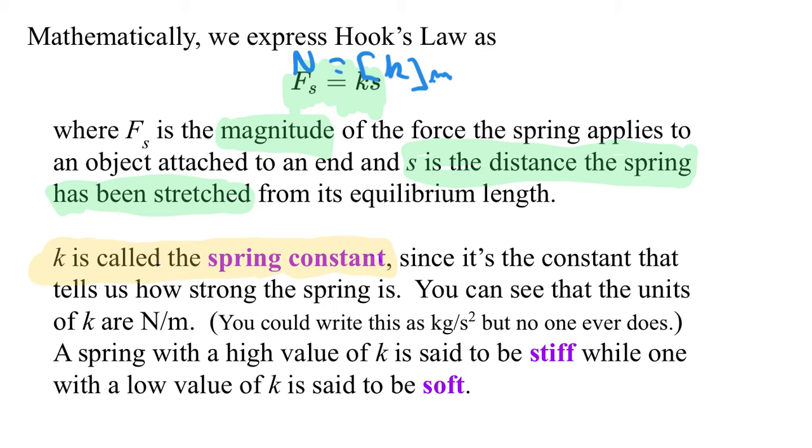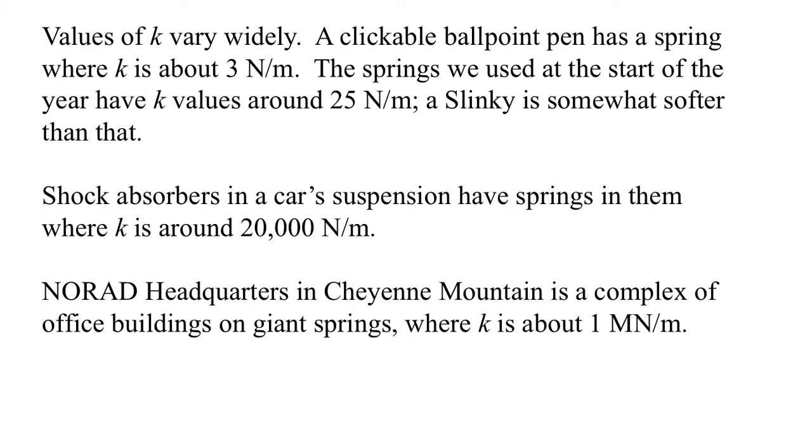A spring that has a high value of K is said to be a stiff spring, while one with a low value of K is said to be a soft spring. Values of K vary widely, though. The clickable ballpoint pen, the kind of thing you might have in your shirt pocket, that has a spring where the K is about 3 newtons per meter. The springs that we used at the start of the year and the first lab we did, they have K values that were around 25 newtons per meter. And a slinky is somewhat softer than that, maybe 10 or 15.